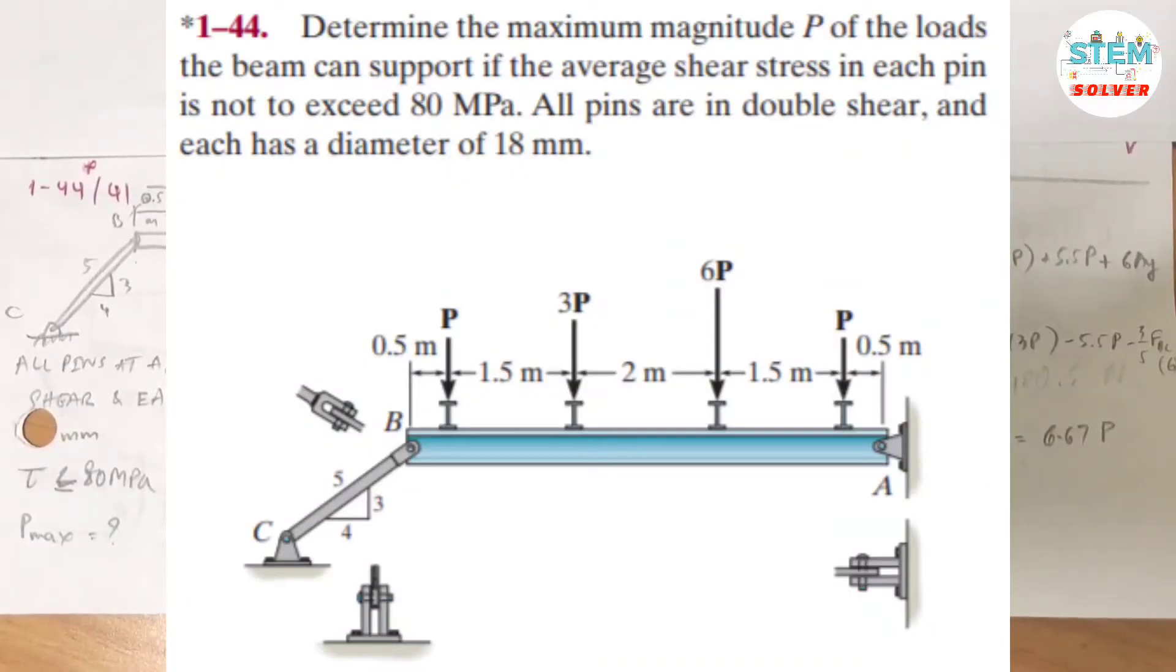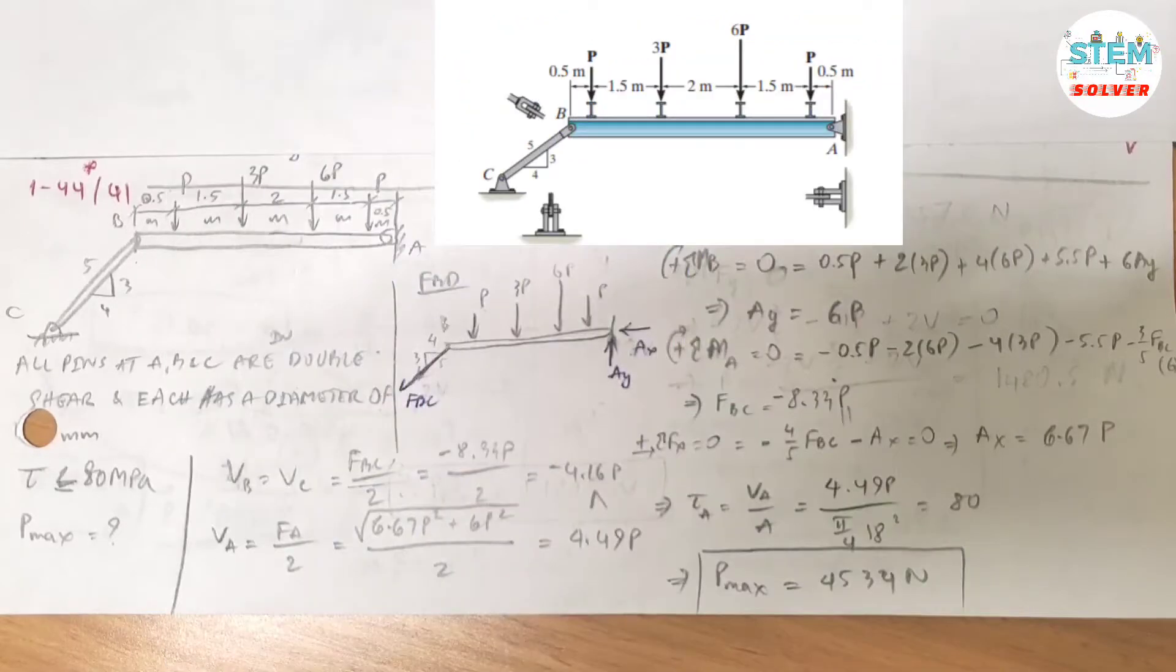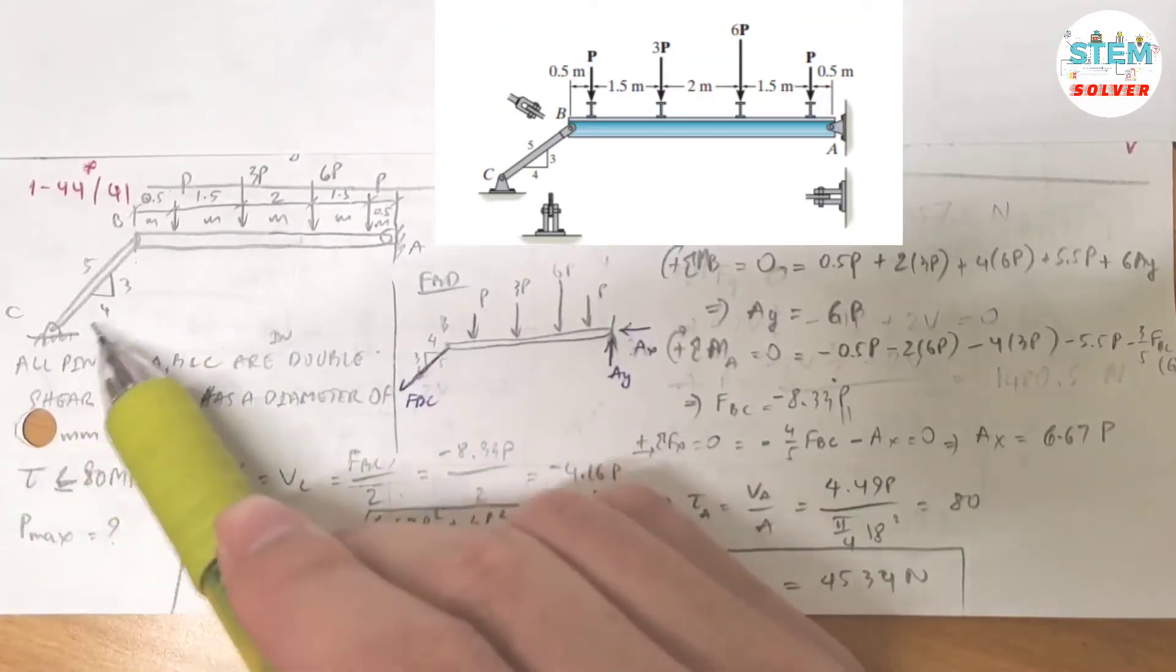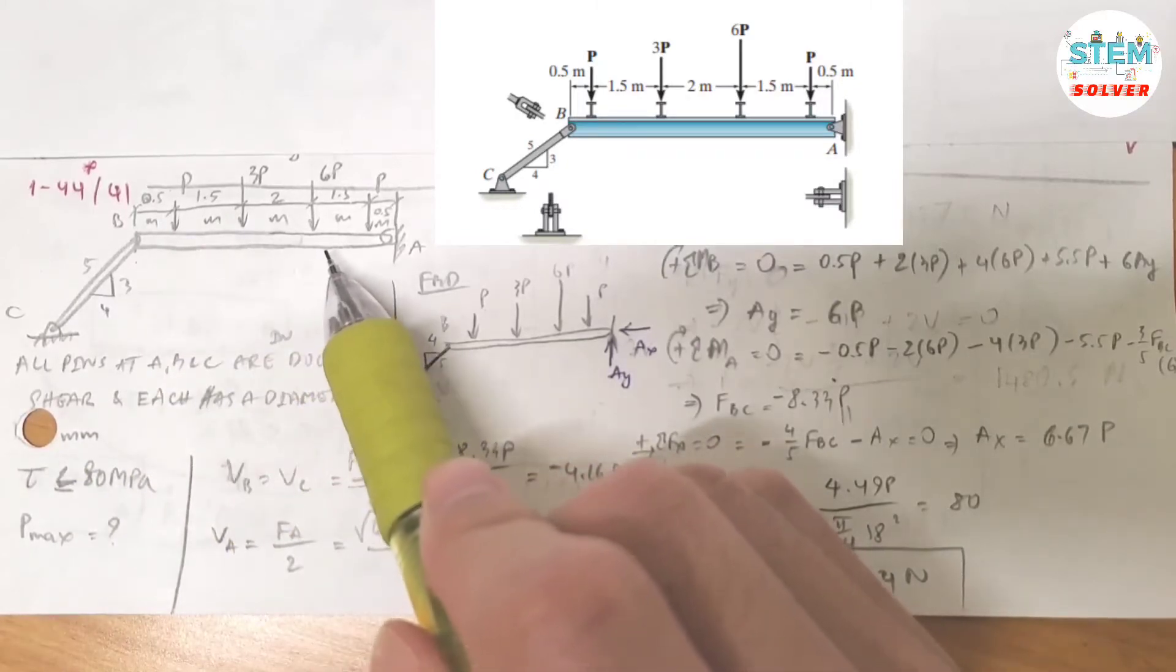Determine the maximum magnitude P of the load the beam can support if the average shear stress in each pin is not to exceed 80 MPa. All pins are in double shear and each has a diameter of 18 mm. So here is the figure for the problem.